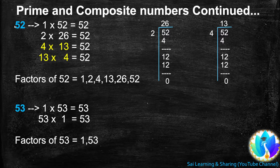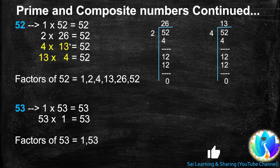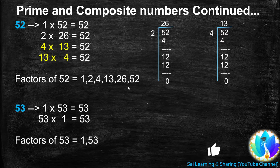52 is a multiple of 4. When we divide 52 by 4, we get quotient 13, so 13 is another factor of 52, and 4 times 13 equals 52. There is no other combination of 52, so at last 13 times 4 equals 52. We stop here because 4 and 13 occurred earlier. Factors of 52: 1, 2, 4, 13, 26, and 52. Since 52 has more than 2 factors, 52 is a composite number.